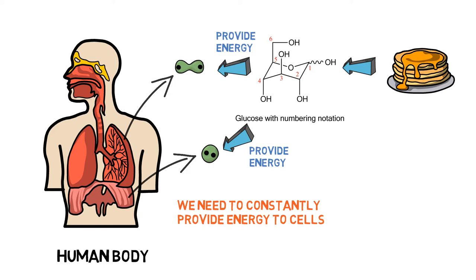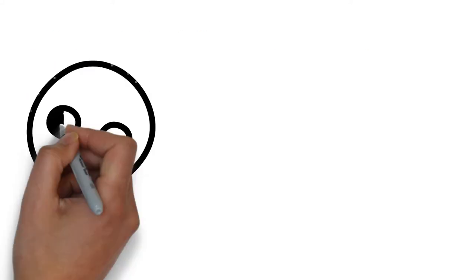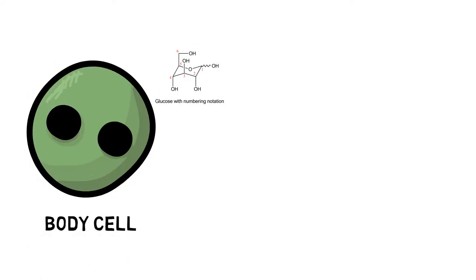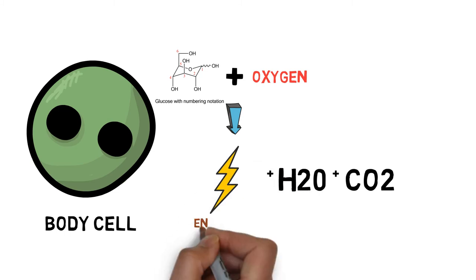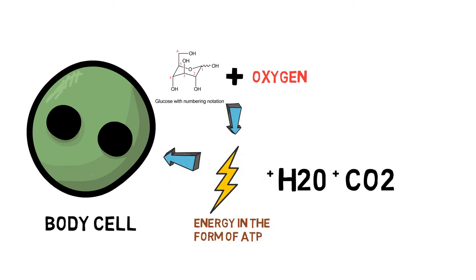After glucose is delivered to body cells, if oxygen is available, the glucose will be broken down to carbon dioxide, water, and energy in the form of ATP, which is used for body cell activities.